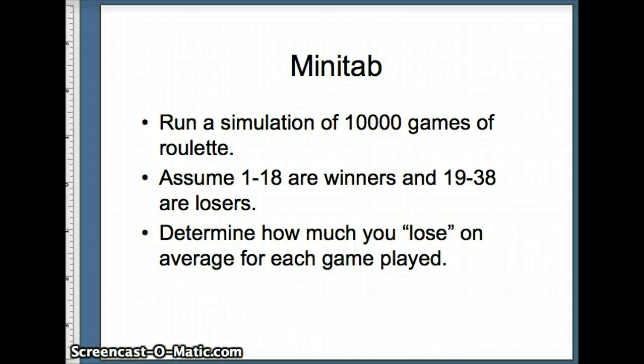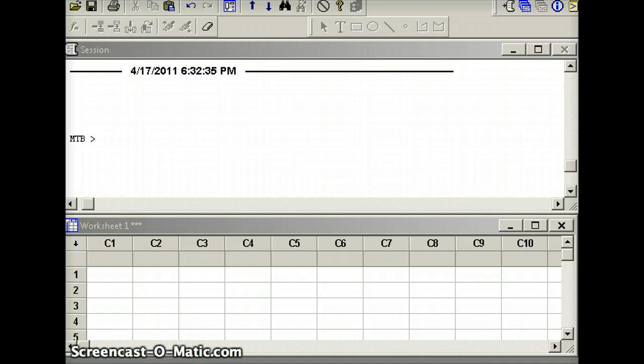We're going to run a Minitab simulation of this. We're going to have 10,000 games of roulette. We're going to assume 1 through 18 are winners and 19 through 38 are losers. We want to see, on average, how much will we lose for each game that's played. We're going to simulate a bunch of roulette games. Random 10,000 c1 semicolon integer 1 through 38. The first number was a 19, then a 3, then a 36.